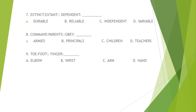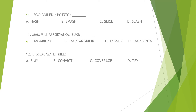Number 8: command is to parents as obey is to... If the one who commands is a parent, who is the one who obeys? Alright, children. Letter C. Number 9: toe is to foot as finger is to hand. Letter D.